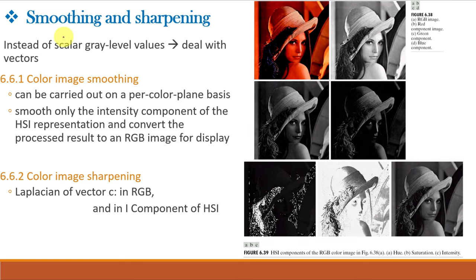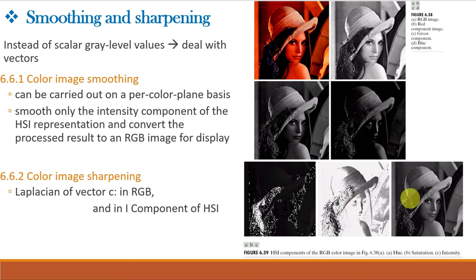As we have applied neighborhood processing techniques for grayscale images for obtaining smoothing and sharpening, similarly we can obtain smoothing and sharpening of color images. Here instead of grayscale values, we deal with color vectors. The smoothing can be carried out on a per color plane basis where we smooth the red, green and blue plane images individually and then combine them, or we can smooth only the intensity component of the HSI representation and convert the processed result to an RGB image for display. Similarly, for color image sharpening, we can take the Laplacian of the vector C for the RGB image or take the Laplacian of the intensity component of the HSI image. This figure shows the red, green and blue component images of this color image, while this figure shows the hue, saturation and intensity images of the color image, where the intensity image is just the grayscale representation.